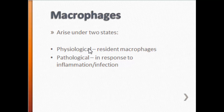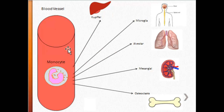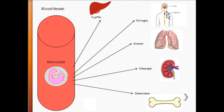Today we'll look at our physiological macrophages, going through them from Kupffer cells to microglia. From the monocyte in your blood vessel, you get microglia — your CNS macrophages present in the brain and spinal cord — alveolar macrophages in the lung, mesangial cells in the kidney, osteoclasts in the bone, and of course Kupffer cells in the liver. This is what we'll be focusing on today.